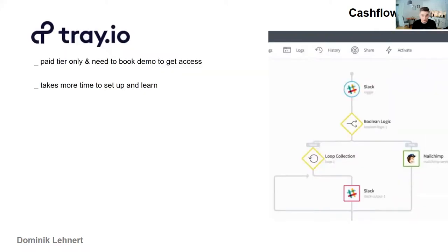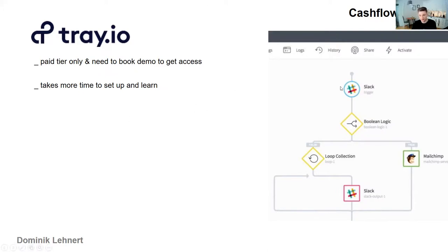Tray.io targets a different audience. There's no free tier — only paid tiers available, and you actually need to book a demo to get access. The minimum tier is somewhere around $800 a month. It takes more time to set up and learn. If you've written some code before it's still manageable — you just need to get used to the layout — but if you've never written code this is going to be more challenging.